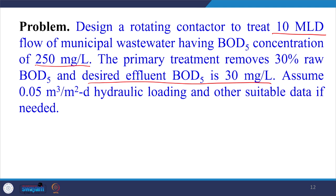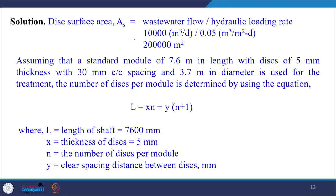We assume a hydraulic loading of 0.05 m³/m²/day. The disc area required can be calculated as follows: waste water flow rate is 10 MLD, which is 10,000 m³/day. Dividing by the hydraulic loading of 0.05 m³/m²/day, we get a required disc area of 2,00,000 m².